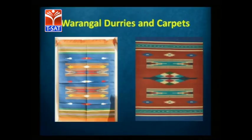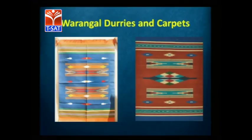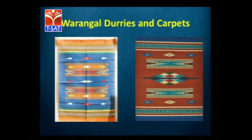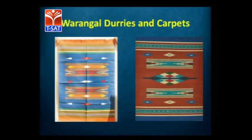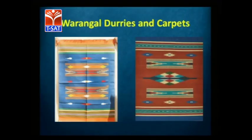Warangal Daris are another important craft in Telangana. Warangal is the important place where these Daris and carpets are made out of jute, cotton, and wool. This again has links with Persia and Iran. Nirmal, Bidri, Filigree, and Daris actually came during the late medieval period when the Islamic rulers' influence and culture travelled from Persia and Iran to the Deccan. The geometric patterns you see also come from the Persian and Iranian influence.